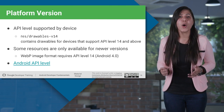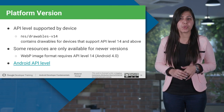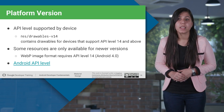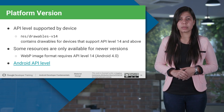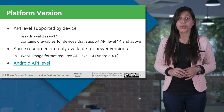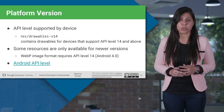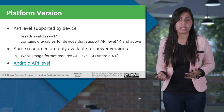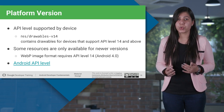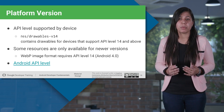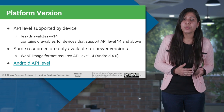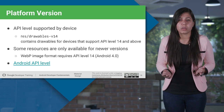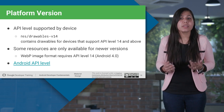You can specify alternative resources depending upon the API level as well, as shown in this example. But you should be aware that some resources were introduced in later API versions only. If you try to make them available in earlier versions in your adaptive layouts, they will not work as they are not supported.